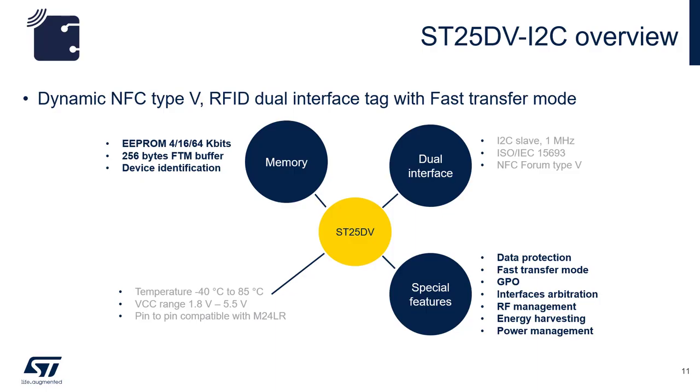The SD25DV memory comes in 4, 16, and 64 kbit devices.